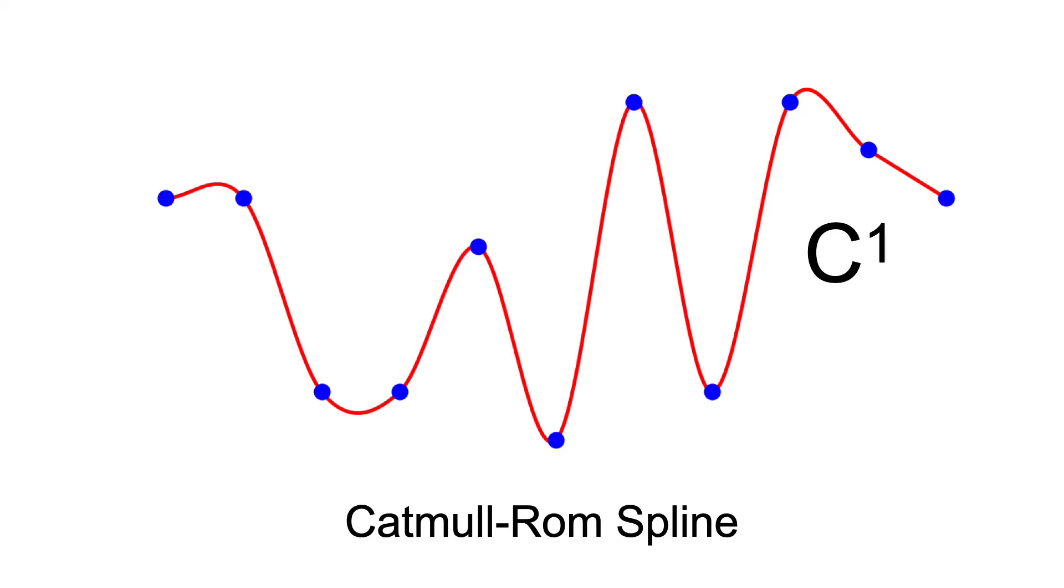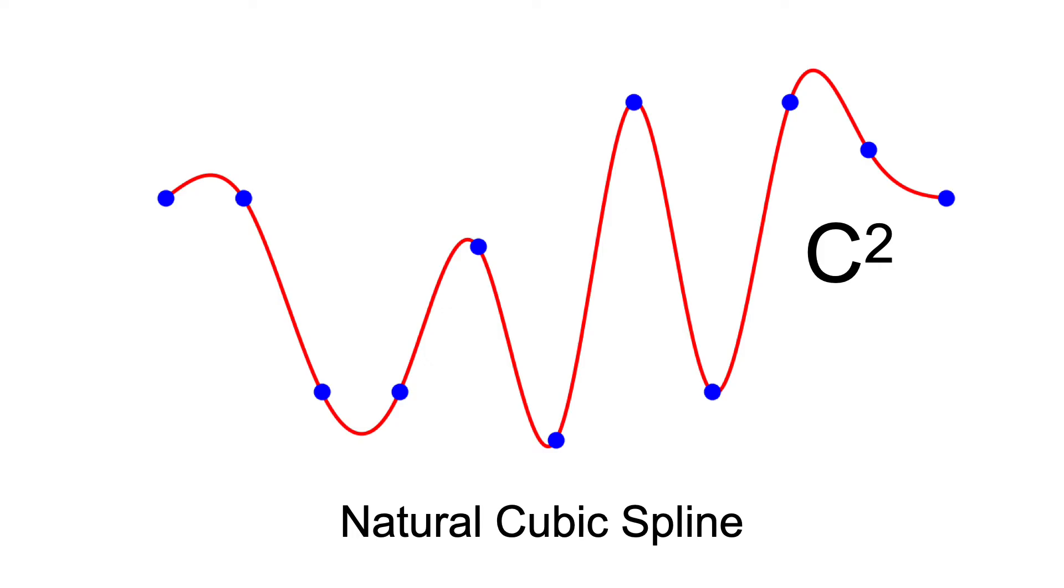Last time we introduced Catmull ROM splines, which have C1 continuity, and natural cubic splines, which have C2 but lack local control.